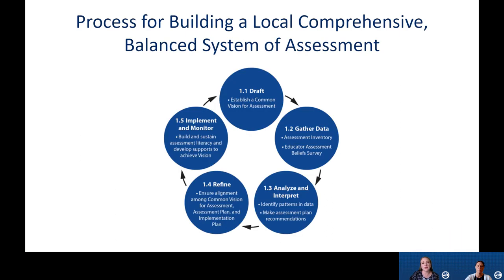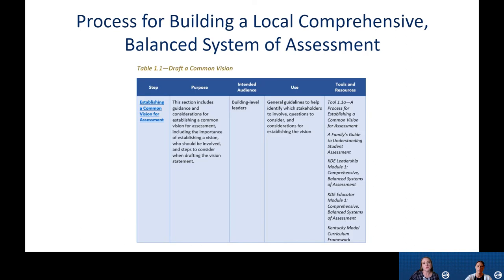Here you see the five steps for building a local balanced assessment system that is comprehensive and tailored to fit the needs and vision of your own school or district. For each of the five steps in the process for building a comprehensive balanced system of assessment, we have created a toolkit with links to resources you can utilize to assist you along the way. Here's a snapshot of one of those steps so you can see how each table in the toolkit is laid out. Each step provides you with a purpose, intended audience, use, as well as valuable tools and resources.